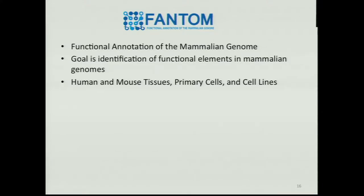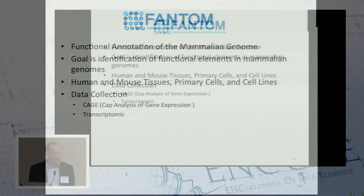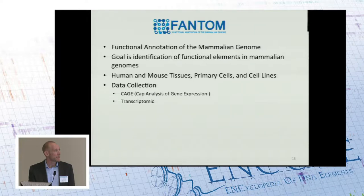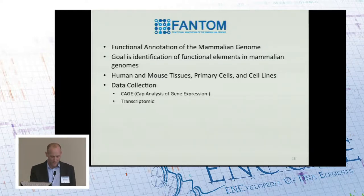They're looking in a variety of human and mouse tissues and cell types, and so they tend to be quite broad on the sample diversity axis. Unlike ENCODE, they're very highly focused in the assay dimension. A great deal of the data that they generate is CAGE data — CAP analysis of gene expression — where they can locate the endpoints of RNAs, and they couple that to a limited extent with transcriptomic data.